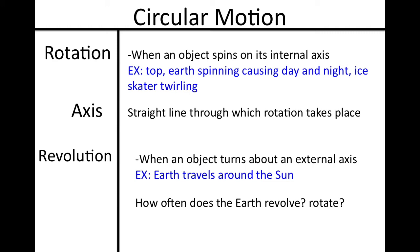Today we're going to be talking about circular motion. With circular motion, you've probably heard of these words: rotation and revolution. Rotation is just an object spinning on its internal axis. We see it all the time, for toys like the little toy called a top — when you spin it, it is rotating on itself, on its axis.